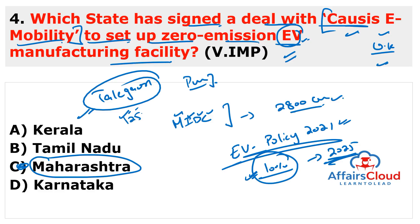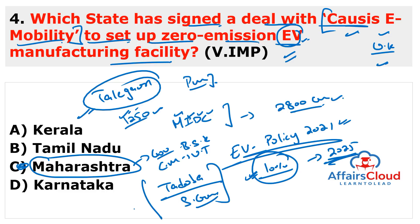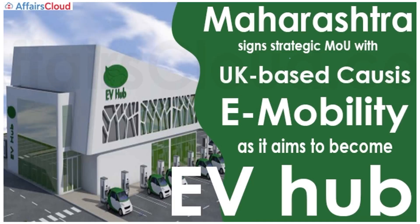The Maharashtra EV Policy of 2021 aims to electrify 10% of the vehicles in Maharashtra by 2025. The main objective is to reduce emissions and help address climate change. This collaboration is expected to generate almost 1,250 employment opportunities and help Maharashtra lead the country in electric vehicle adoption. Maharashtra's governor is Bhagat Singh Koshyari and the chief minister is Uddhav Thackeray.